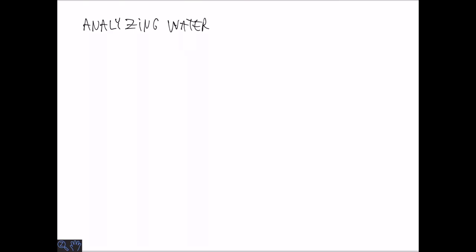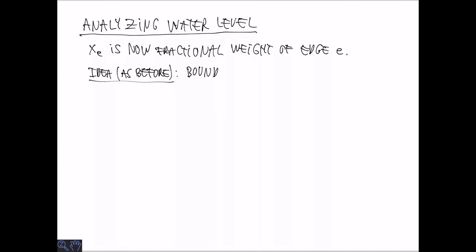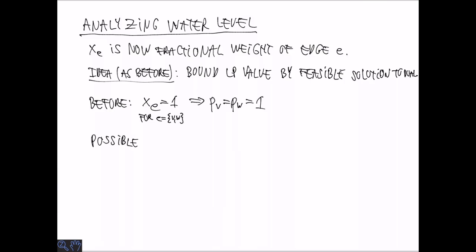To analyze the water level algorithm, we are going to take a similar approach as before. So again, we want to consider these LP and the decision variables XE where XE is now a fractional weight of an edge. And basically we want to bound the LP value by some feasible solution to the dual. So what we did before was basically whenever we set a decision variable to 1 corresponding to an edge VW, we set PV and PW equal to 1.